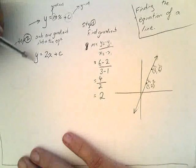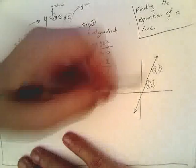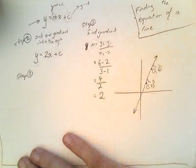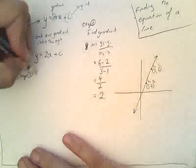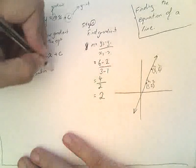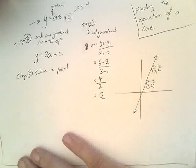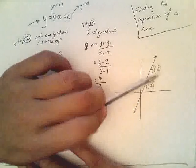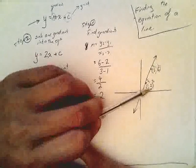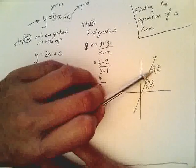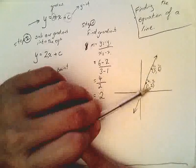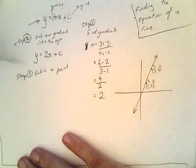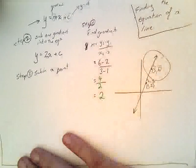One way that we can find it is by subbing in one of those points. So, step three of this kind of question is to sub in a point. Now, which point do you sub in? It doesn't matter. You can either sub in 3, 6 if you want to, or you can sub in 1, 2. Remember, this is your x value, and this is your y value. So, when you sub them in, you're going to sub them in for x and for y. I'm going to sub in point 2, that point there.